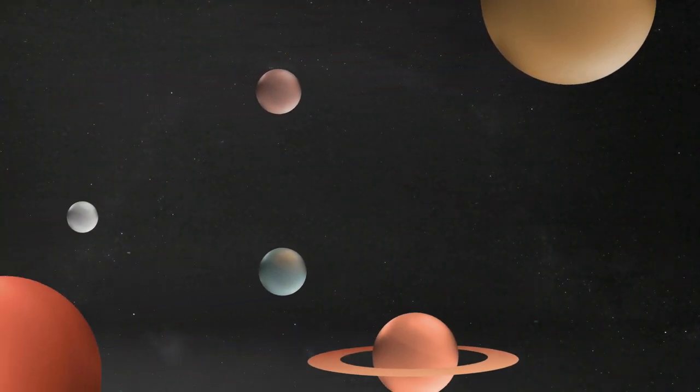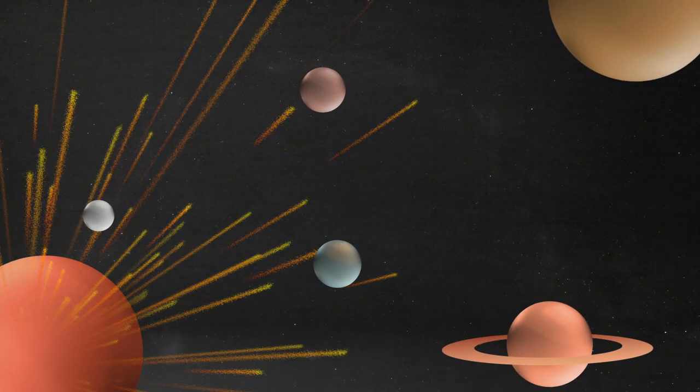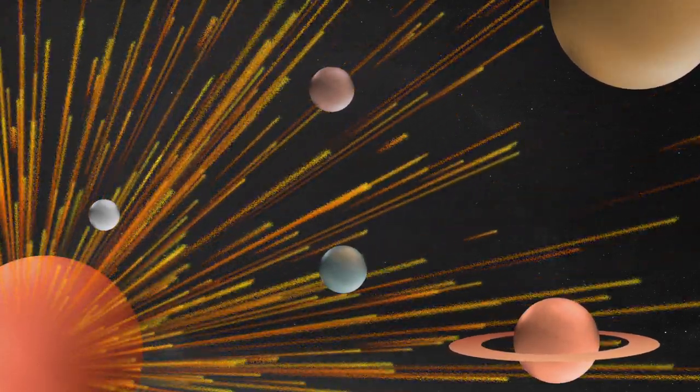There are a few ways to think about the edge of the solar system. One is with the extent of the solar wind. This is the constant flow of charged particles gushing out of the sun at a million miles per hour and bathing the planets.